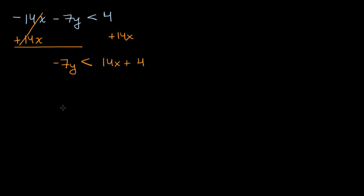14x plus four, and now I want to divide both sides by negative 7 in order to isolate this y. But we have to be very, very, very careful. When you multiply or divide both sides of an inequality by a negative number, you need to swap the inequality sign. Instead of it being less than, it would have to become greater than.